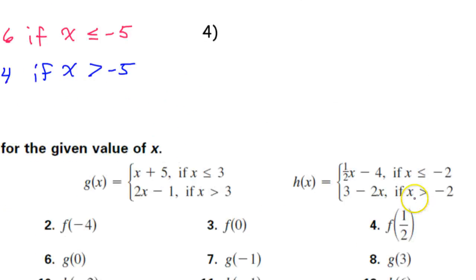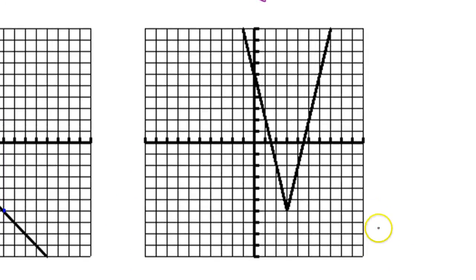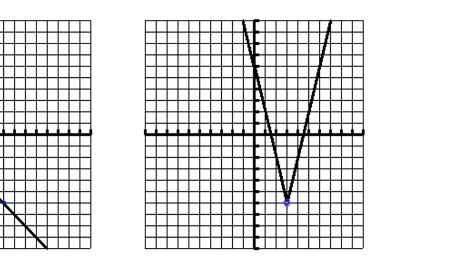Let's do number 4. The vertex is at 3 comma — counting 1, 2, 3, 4, 5, 6 — so 3 comma negative 6. Keep that in mind. Now let's do the slope of the left-hand side. It seems to hit the grid lines right here — that's up 4 over 1. As I go from left to right, it's going down 4, right 1. So that's negative 4 over 1 or just negative 4. That gives y equals negative 4x.